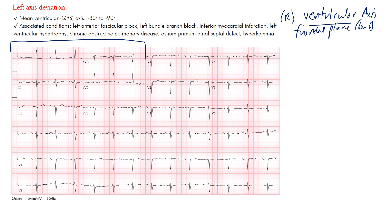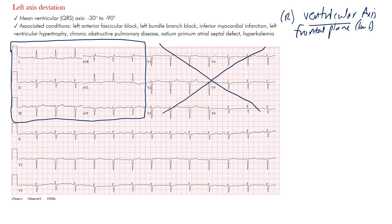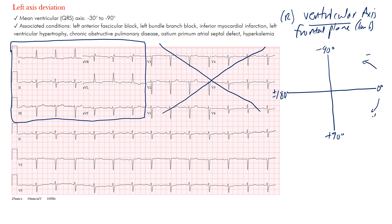Looking at the limb leads from a standard 12-lead EKG, you don't need to look at the precordial leads. We're talking about the frontal plane axis. In our quadrant system — which you want to keep to memory — this is zero degrees, this is positive 90 degrees, this is positive or negative 180 degrees, and this is negative 90 degrees. Going this way is negative, going this way is positive.